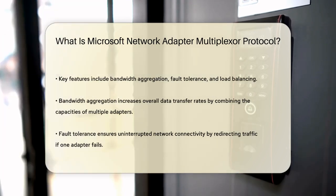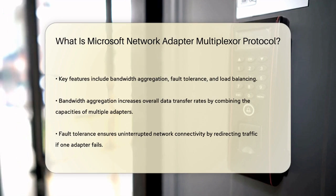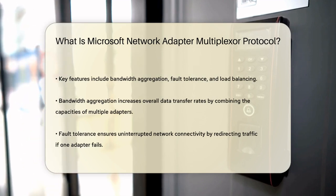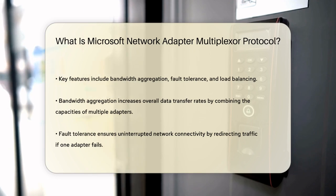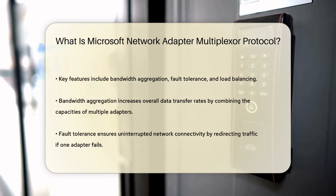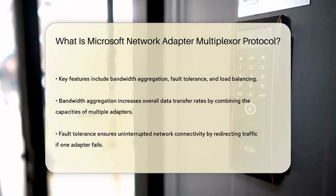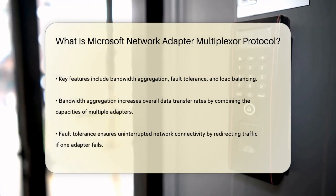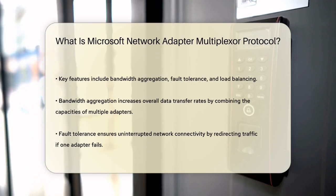By combining the bandwidth of multiple network adapters, you can significantly increase the overall data transfer rate. This is especially useful in environments like data centers or offices where high-speed data transmission is crucial. In addition to boosting bandwidth, the Microsoft Network Adapter Multiplexer Protocol ensures fault tolerance. If one of your network adapters fails, the protocol automatically redirects the traffic through the remaining active adapters, keeping your network connection uninterrupted.